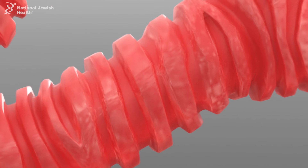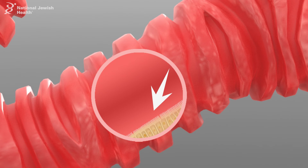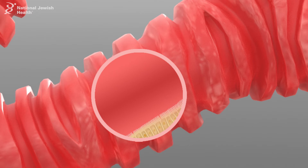The lining of the trachea and the major bronchi consists of ciliated columnar epithelium, which gradually becomes more cuboidal, with fewer ciliated cells at the periphery of the airway. The cilia work like an escalator to sweep microbes and debris out of the lungs.